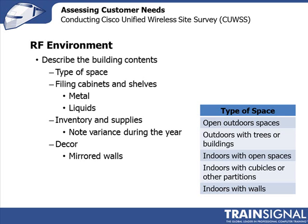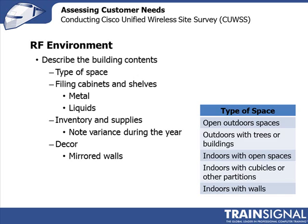You need to say where the obstacles are — write down the shelving, any mirrors on the wall, heavy machinery, anything that may impact your site survey. Now is the time to gather that information and make sure it's recorded so you can put it into your plans and work around them. Also identify problem areas, such as elevators, escalators, kitchen areas that might have microwave usage, and exceptionally high ceilings like atriums and auditoriums. Mark those off on the site plan because you'll want to spend more time checking those out.